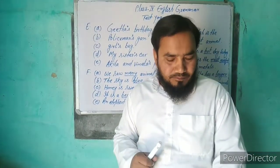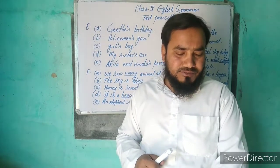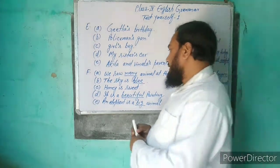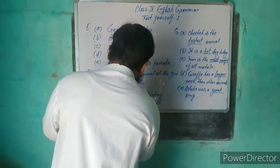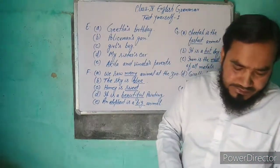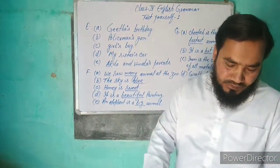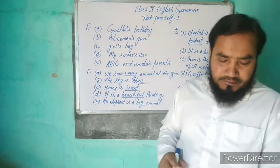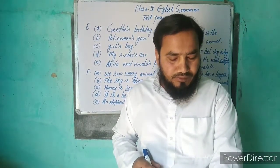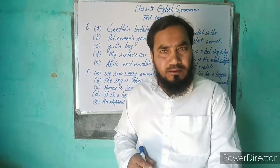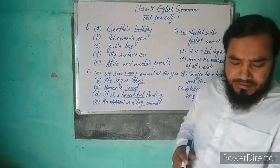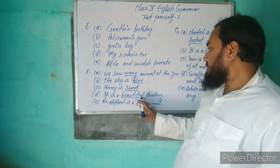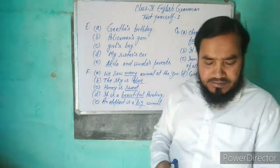C ہے: Honey is ___. Option ہے sweet۔ Honey میٹھا ہوتا ہے تو sweet fill ہوگا۔ Honey is sweet۔ D ہے: It is a ___ painting. Options ہیں beautiful, fast۔ تو beautiful fill کریں گے۔ It is a beautiful painting۔